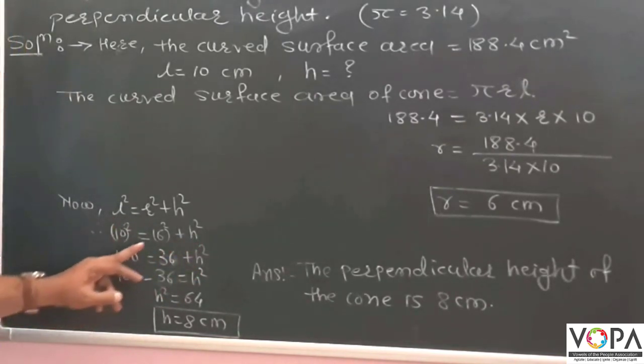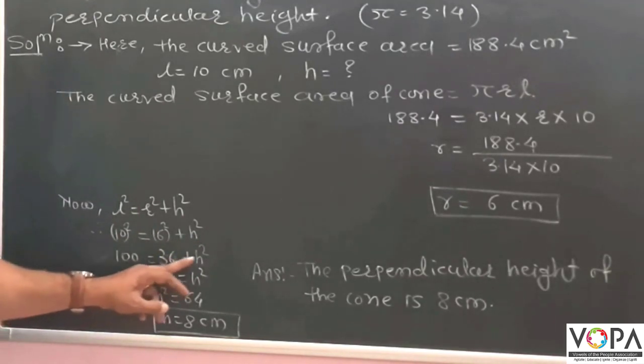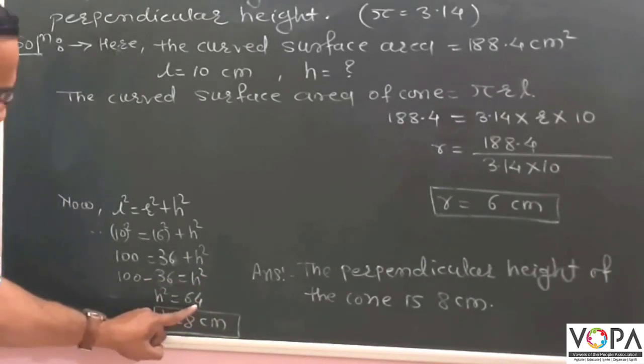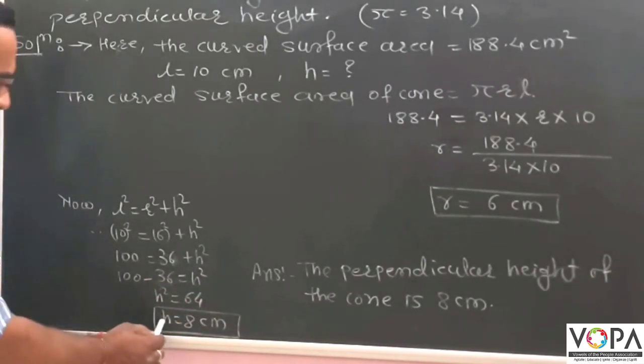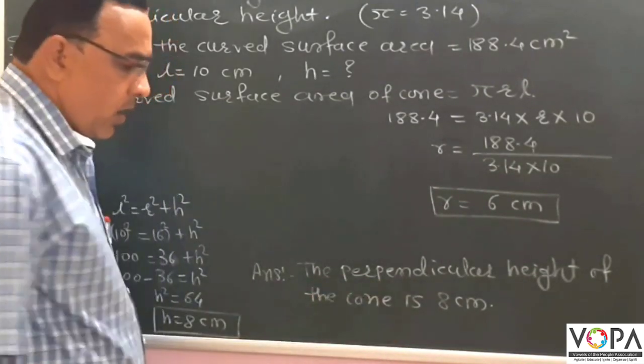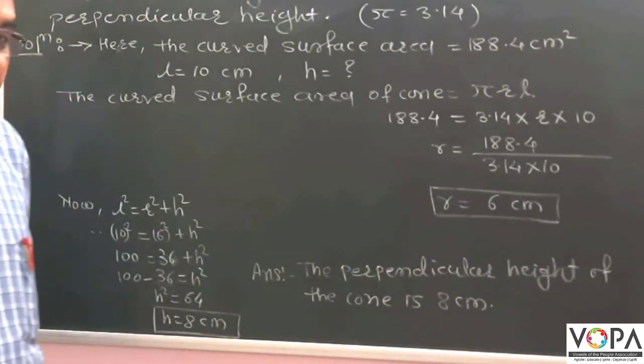10² is 100, 6² is 36 plus h². Now 100 minus 36 is equal to h². h² is equal to 64. h is equal to 8 cm. Then the answer is, the perpendicular height of the cone is 8 cm.